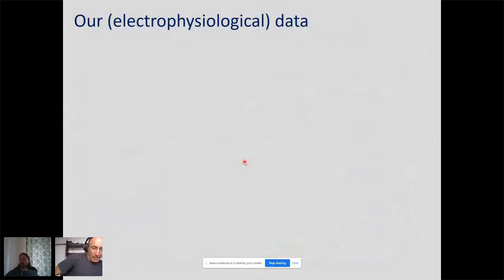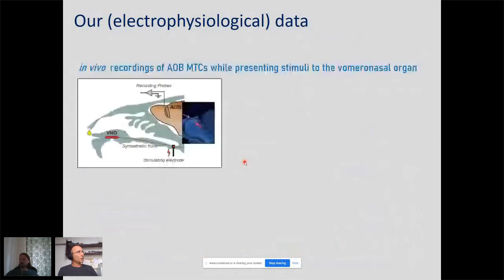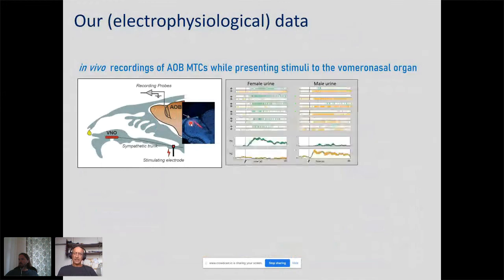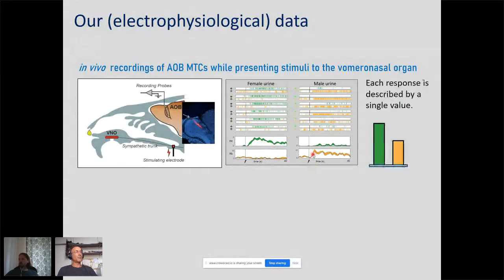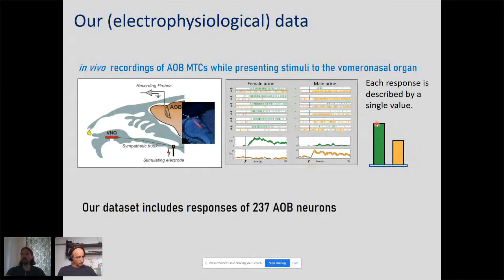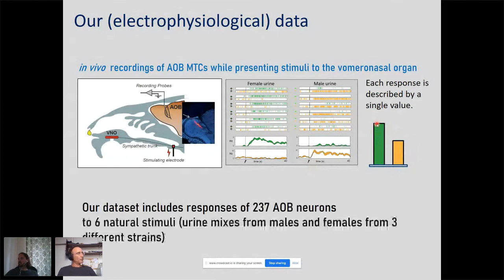To answer that I need to explain our data. We have electrophysiological data using multisite electrodes recording activity of mitral tufted cells of the accessory olfactory bulb, measuring rate changes to stimuli presented to sensory neurons. In our dataset we have about 240 AOB neurons with responses to six different natural stimuli — urine mixes from males and females from three different male strains. Each response is condensed to a single value: the average firing rate over a prolonged temporal window. We also have chemical data — measurements of molecule levels for the very same stimuli, both volatiles and peptides, with focus on peptides as the more interesting class for these neurons.